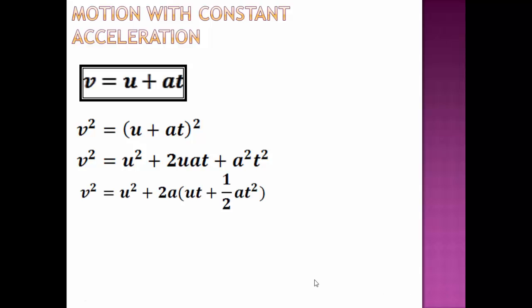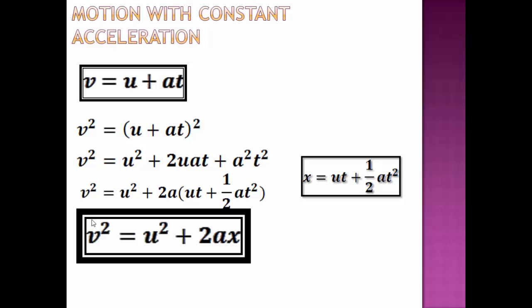Simplifying this further here we take out 2 a common. So in the bracket we will have ut plus half a t square. Now from second equation of motion ut plus half a t square is nothing but position x. Therefore final expression will be v square equals to u square plus 2 a x. This is your third equation of motion.